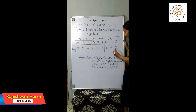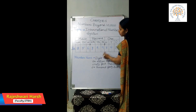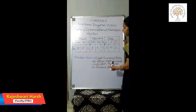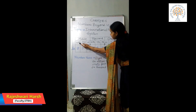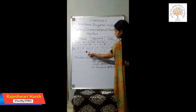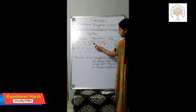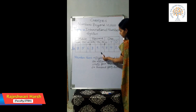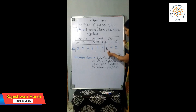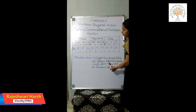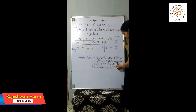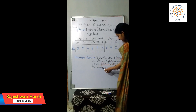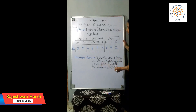We always start grouping digits from the right side, never from the left side. Let's take an example: 856,894,642. Here 8 is in the hundred millions place, 5 is in the ten millions place, 6 is in the millions place, 8 is in the hundred thousands place, 9 is in the ten thousands place, 4 is in the thousands place, 6 is in the hundreds place, 4 is in the tens place, and 2 is in the ones place. So the number name of this number is 856,894,642.